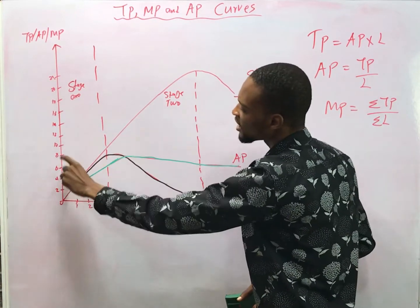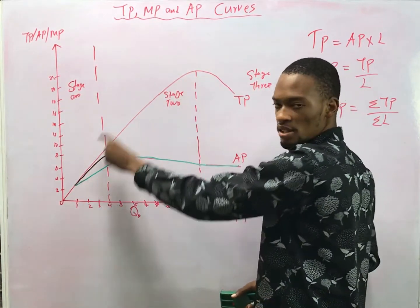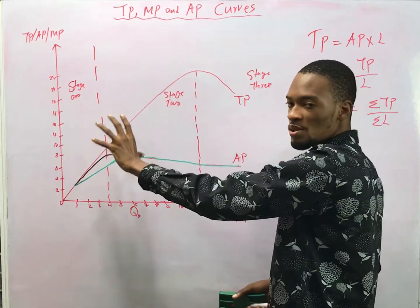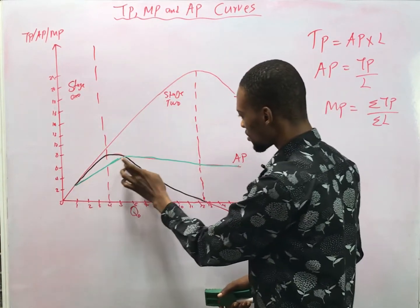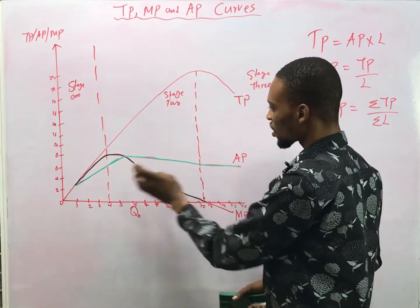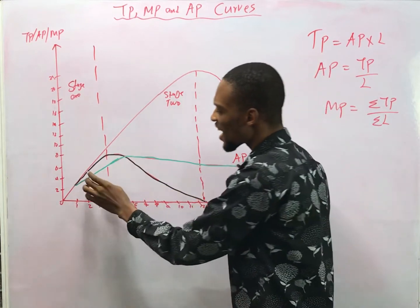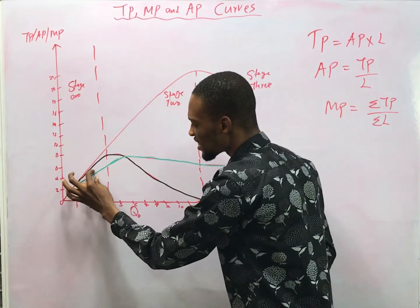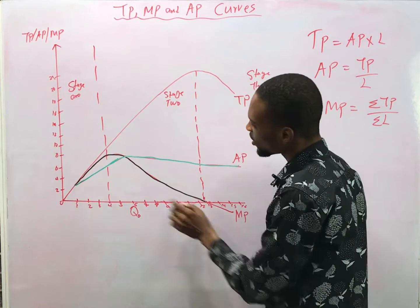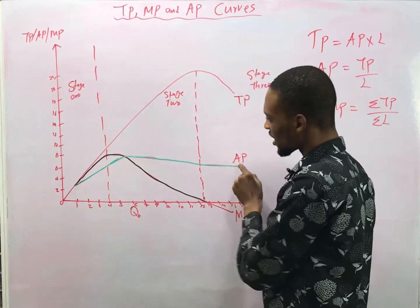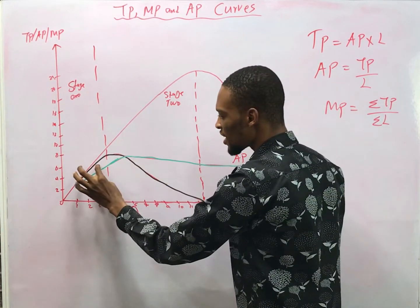As average product is increasing, marginal product is also increasing. But notice that as they are both rising, the marginal product is higher than the average product.